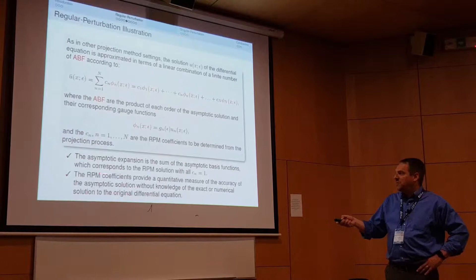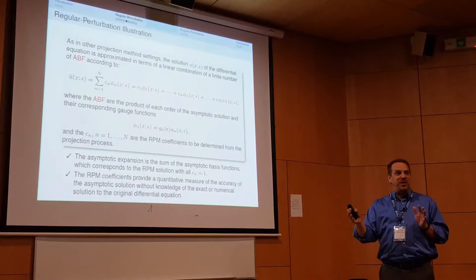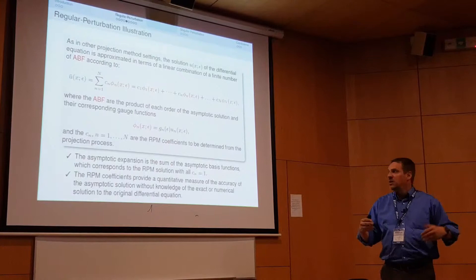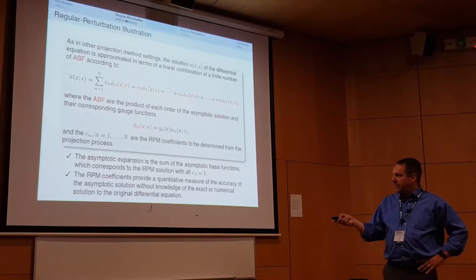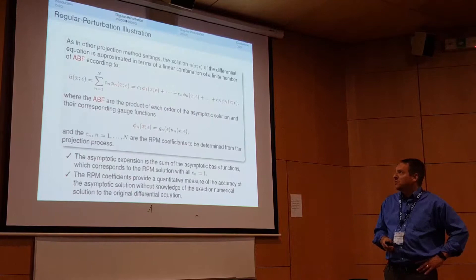A nice side benefit is an internal consistency check on the asymptotics. Normally, the only way to assess how good your asymptotic expansion is, is to compare it against numerical or experimental solutions. But the RPM coefficients provide a quantitative measure of the accuracy of the asymptotic expansion itself: the farther the C's deviate from one, the less accurate the asymptotic expansion.